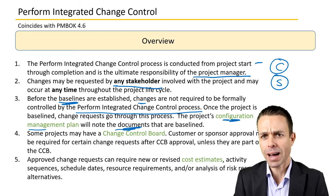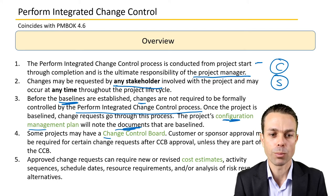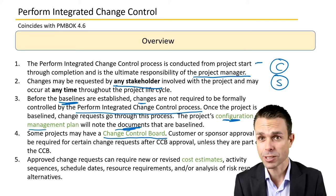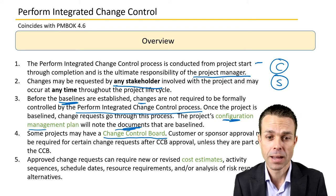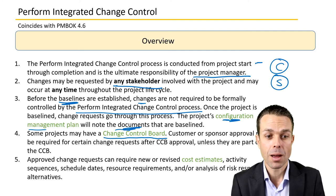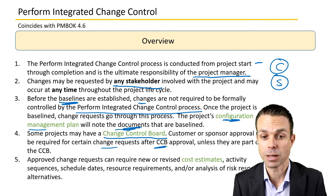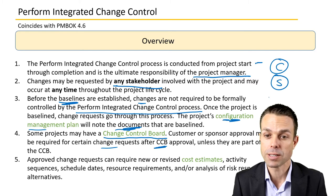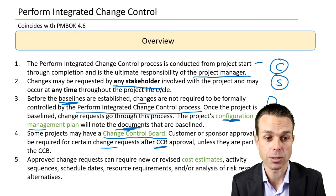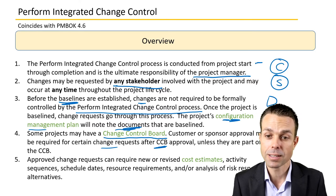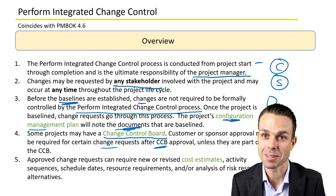If you're on a large enough project, it might have a change control board or CCB, which you'll also see come up in your exam. The customer or sponsor approval may be required for certain change requests after the CCB approval. So you might raise a change request, it goes through to the change control board, and then it still might need approval by the actual sponsor — the person sponsoring the project — unless they are a part of the change control board themselves.